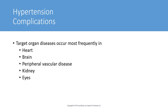The most common complications of hypertension are target organ diseases. In the heart, hypertensive heart disease can occur. In the brain, ischemic stroke — caused by clot buildup at the endothelial cell — or hemorrhagic stroke if blood vessels rupture due to chronic overstretching at the endothelial level. Ischemic stroke accounts for approximately 80% of strokes. Hypertension also affects the eyes, peripheral vasculature, and kidneys.